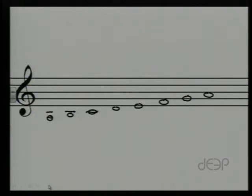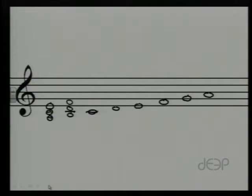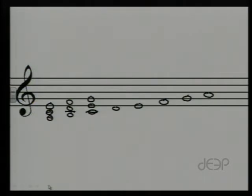We will now create a triad over each step of the scale using notes that come from that scale. The triad based on the first step of the scale is A, C, and E. The triad based on the second step is B, D, and F. Third step: C, E, G, and so on. As you're watching this, you might want to pause the video right now and recreate those triads over the A minor scale, and take a minute to figure out their quality — are these triads major, minor, diminished, or augmented?